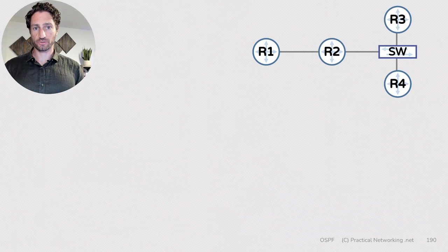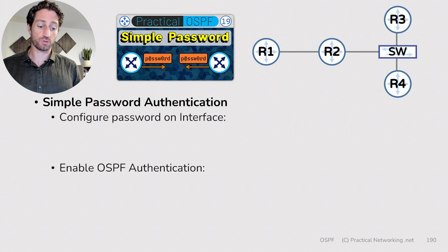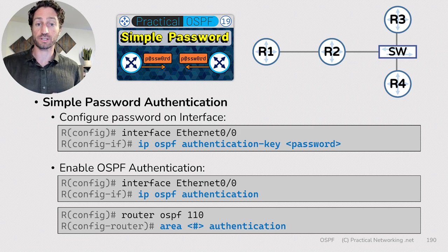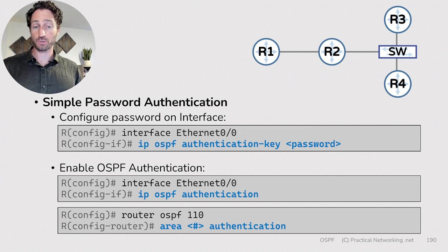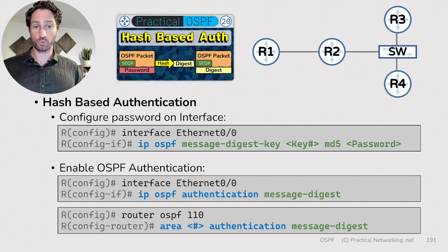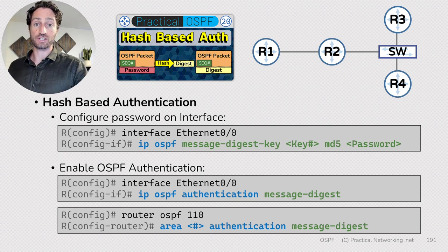The last couple of lessons in this series covered OSPF authentication. Back in Lesson 19, we discussed simple password-based authentication and showed you the commands to configure and verify it — though it isn't the most secure option. A much better option is hash-based authentication, which was the focus of Lesson 20. If any of that is unfamiliar, I'd recommend checking out the last two lessons in the series.